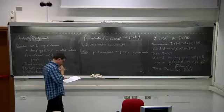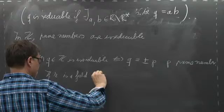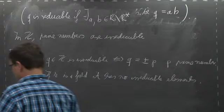If K is a field, it has no irreducible elements, because all elements of K without zero are units, and zero was excluded.